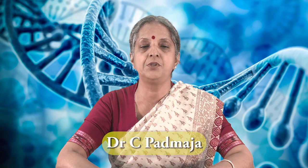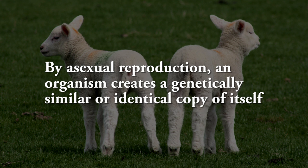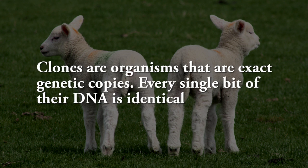In the previous episodes we learned much about reproduction. There is a special mechanism that has evolved in producing animals similar to their parents, called cloning. Cloning is the production of an exact copy of a cell, any other living part, or a complete organism by asexual reproduction. An organism creates a genetically similar or identical copy of itself. Daughter cells or organisms thus produced from a single parent are called clones. Clones are organisms that are exact genetic copies — every single bit of their DNA is identical.